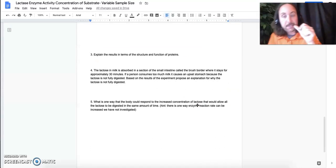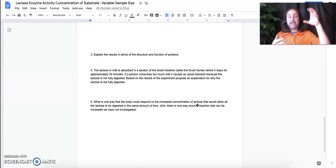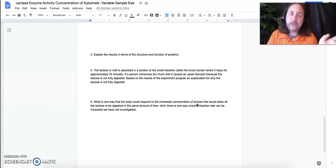And then the last question asked, what else could you do to respond to an increased concentration of lactose that would allow all the lactose to be digested? And I gave you a hint. I said, there's one other way you can increase enzyme reaction rate. And it's actually what your body does. So if you drink a bunch of milk, your body responds by producing extra lactase, the enzyme itself. So if you have more enzyme, you can react the substrate at a faster rate because there's more enzymes interacting. Again, collision theory comes in.